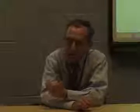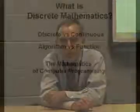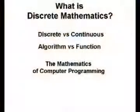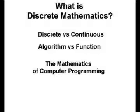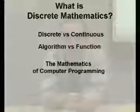So what is discrete mathematics? A couple of things characterize it. As its name implies, it is discrete versus continuous — finite collections rather than the dense and infinite collection of real numbers that dominates calculus. That might make it sound easier, but that's deceptive. It's not easier. It's just different.